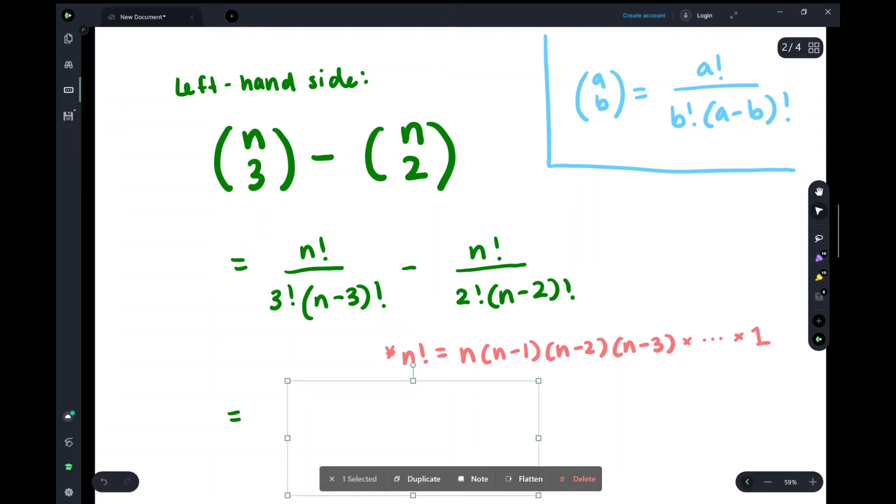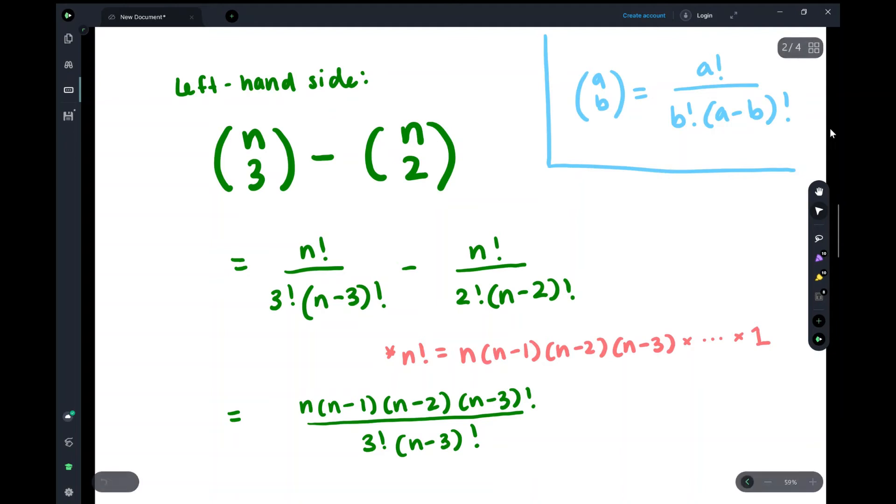So I turned this into this, because these are the same. I chose to stop at (n minus 3) factorial because we have it in our denominator, and in the next step that will help us simplify. We'll just do the same thing for the next term.